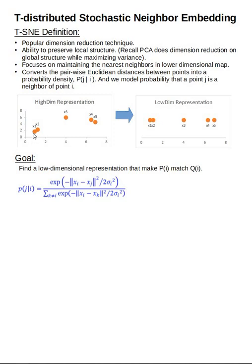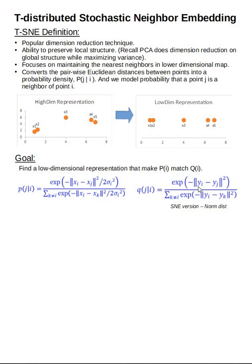That is the high-dimensional representation. We have a very similar notion for the lower-dimensional representation — Q(J|I). Here, YI is a projection of XI in the lower-dimensional space, and YJ is a projection of XJ in the lower-dimensional space. We again calculate the Euclidean distance YI minus YJ and divide by the sum of all Euclidean distances. This formulation for probability in the lower-dimensional space is based on normal distribution assumptions from the SNE paper, published in 2002.